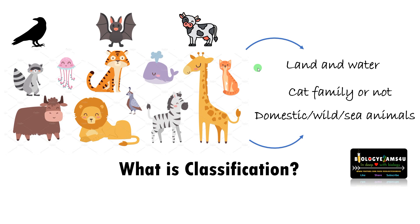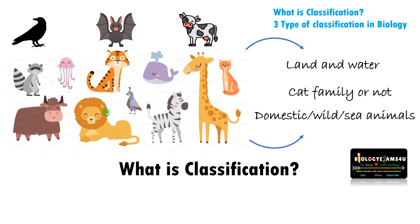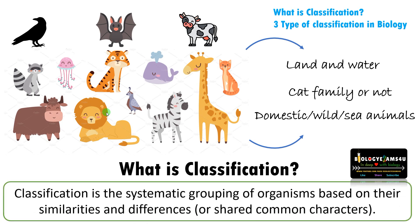So there are many possibilities to classify this group of animals. What we did was grouping of organisms based on similarities and differences. We can define classification as the systematic grouping of organisms based on their similarities and differences, or shared common characters. In this video we'll be discussing what is classification and three types of classification.